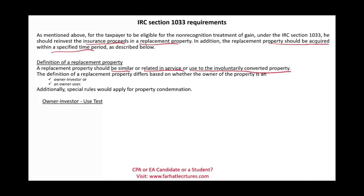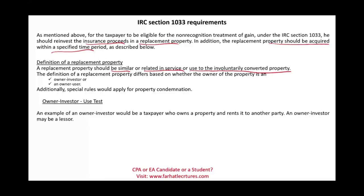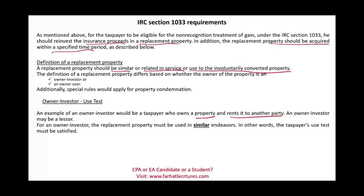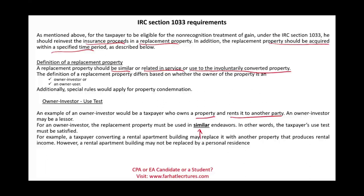For an owner-investor — for example, a taxpayer who owns property and rents it to another party — there is a use test. The replacement property must be used in a similar endeavor. It doesn't have to be the same but similar. For example, a taxpayer converting a rental apartment building may replace it with another property that produces rental income. However, a rental property building cannot be replaced with a personal residence — but you can invest in another rental business.